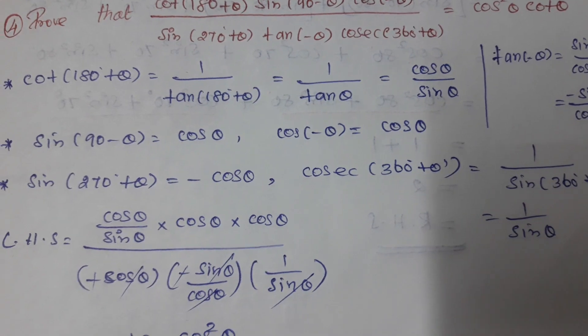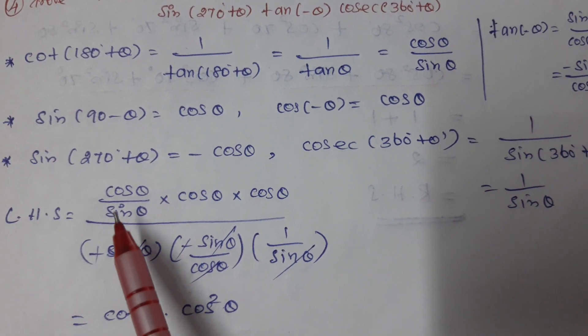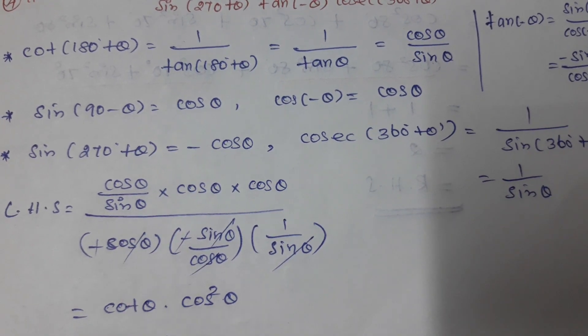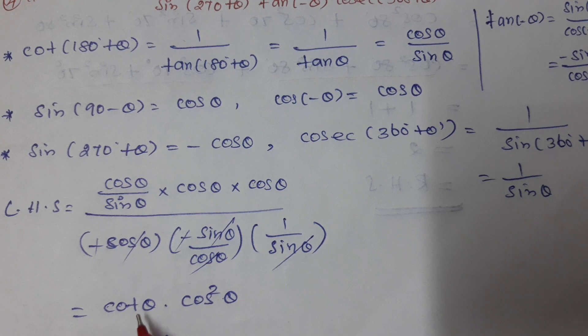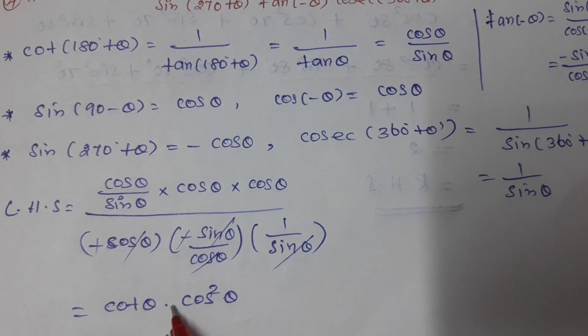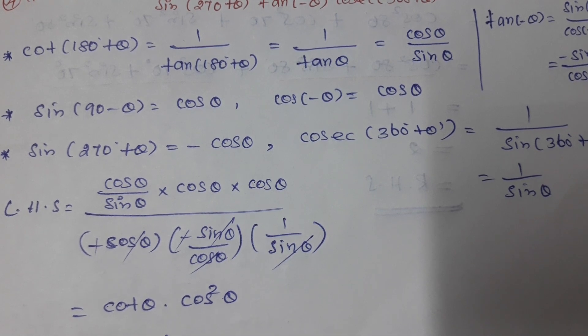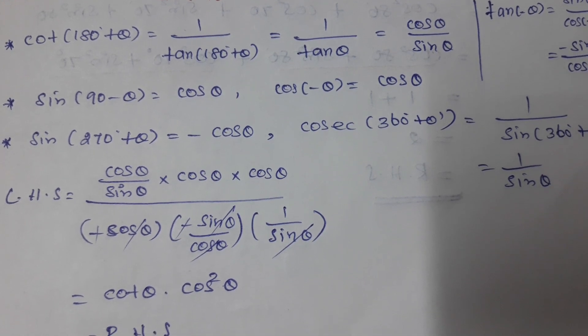Now replace in the LHS and cancel. We can write cosθ into cos²θ. This equals the RHS.